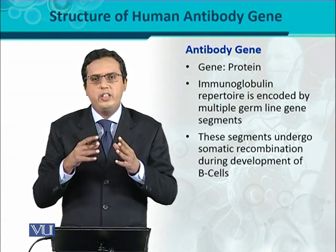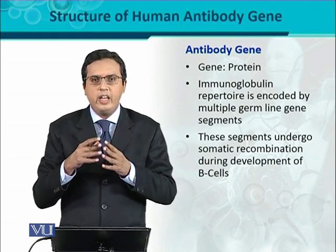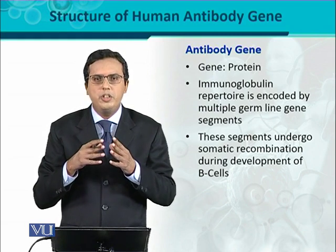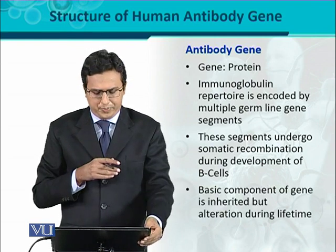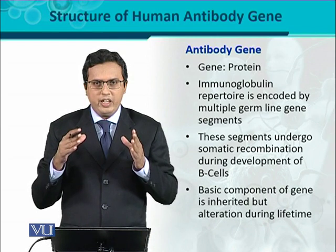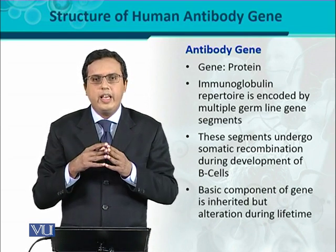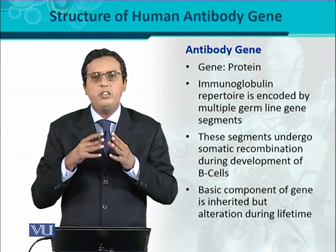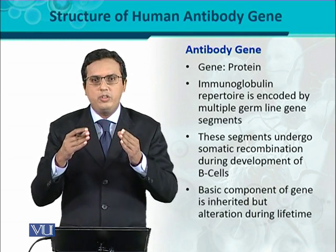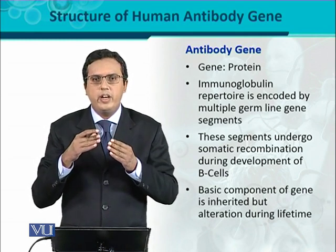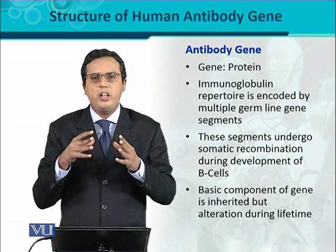The next time, whenever there is a different antigen, against that antigen new B cells will develop, in which the immunoglobulin gene maturation and development will be different. The basic gene components are inherited from the parents, but the recombination that occurs is at the somatic level — meaning it is not germline recombination. The genes are inherited from parents, but the recombination happens in somatic cells like B cells — that is why it is called somatic recombination.